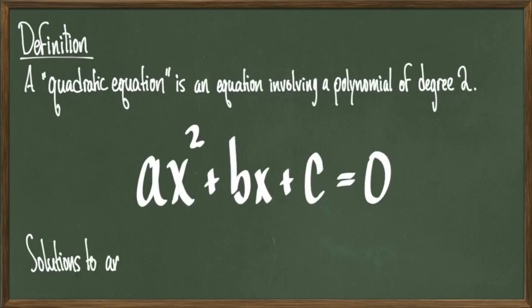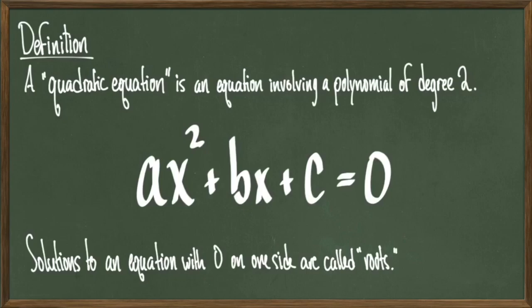Since this equation is set equal to 0, the solutions are called roots. In general, a quadratic equation will have two roots. Sometimes both of those roots end up being the same thing though. This video talks about how to find those roots.